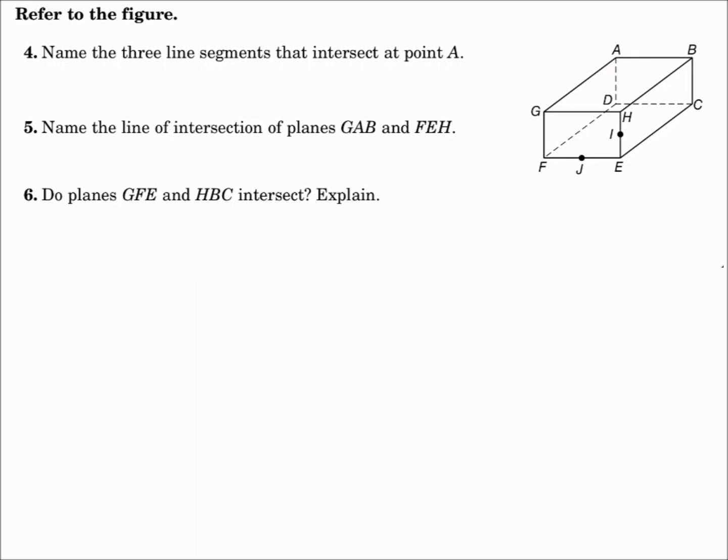Number five. Name the line of intersection of planes GAB and plane FEH. Plane GAB, look where points G, A, and B are. That is the top face. Plane FEH, look at points F, E, and H. That's the front face. The front face and the top face intersect at this line right here. And that line is line GD.